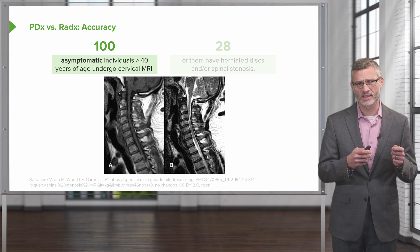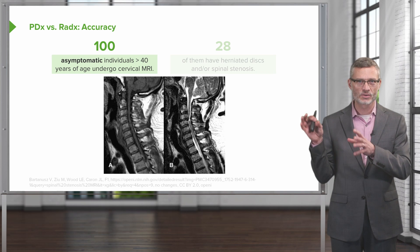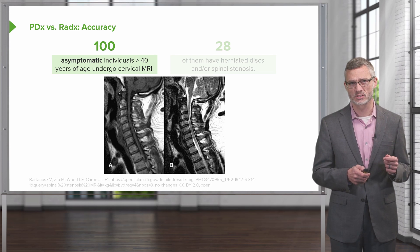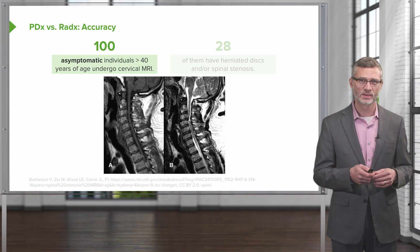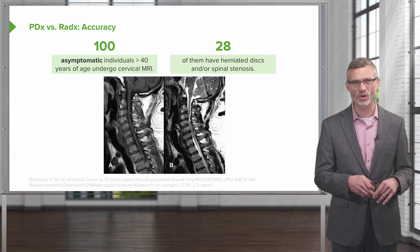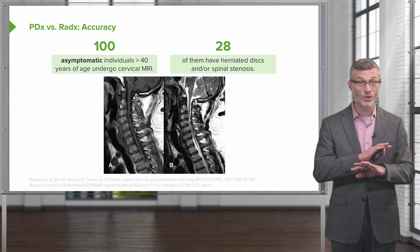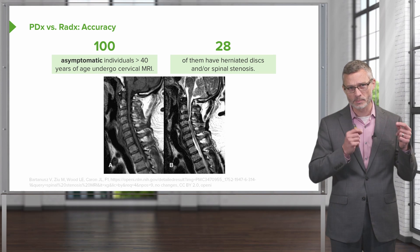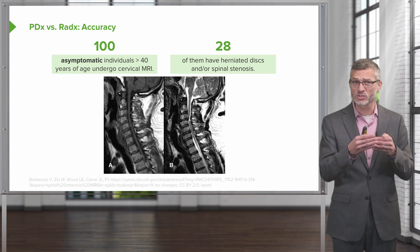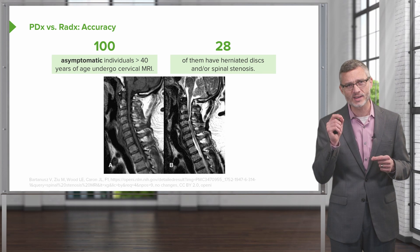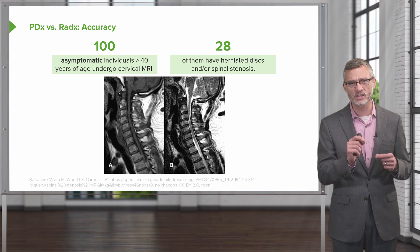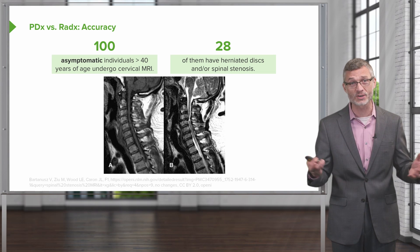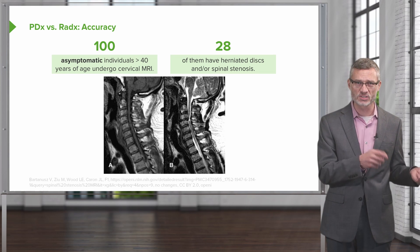I've mentioned elsewhere the importance of the physical exam versus radiologic imaging, and this is a great example. There was a study that looked at 100 asymptomatic persons over the age of 40 who had a cervical neck MRI. It turned out that 28 of them had evidence of herniated discs and/or spinal stenosis — folks with no symptoms whatsoever. So if we just image everybody with back pain, we're going to find disc bulges, facet joint arthropathy, maybe even spinal stenosis. But if those areas don't directly correlate with our physical exam findings, we shouldn't perform surgery on them, because you're going to be causing more problems than you started with. This is why it's so important to correlate our physical exam with radiologic imaging.